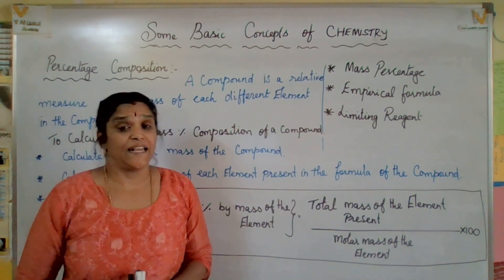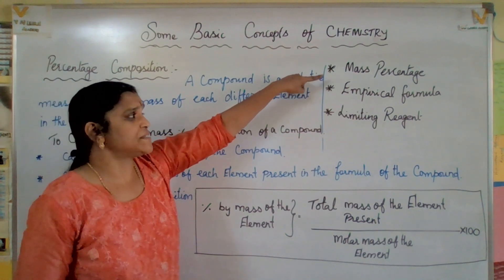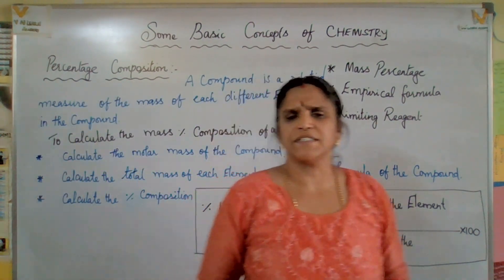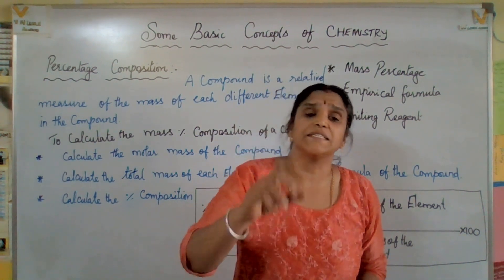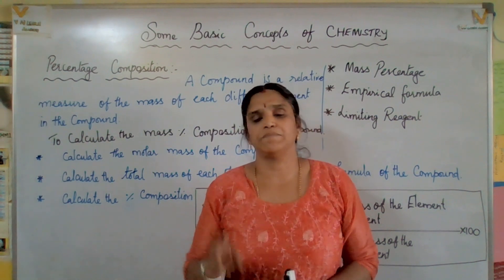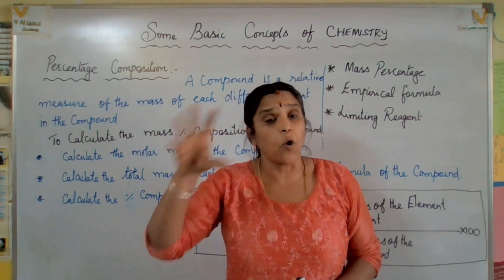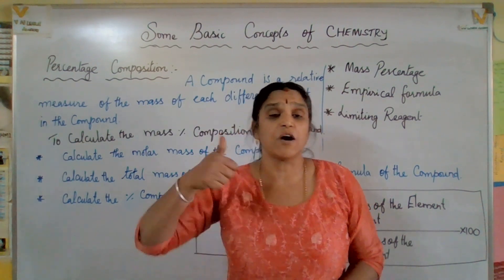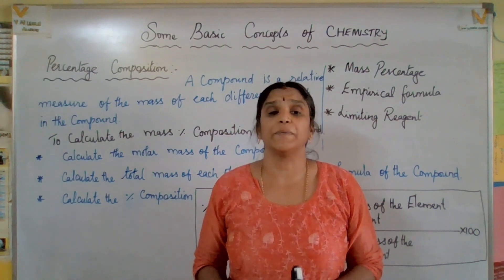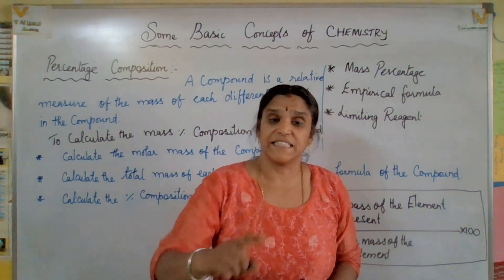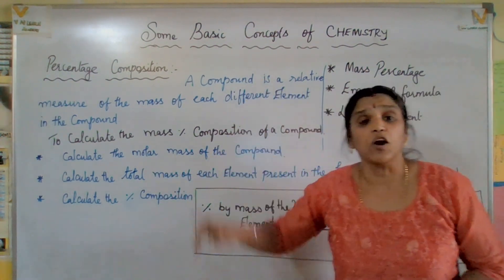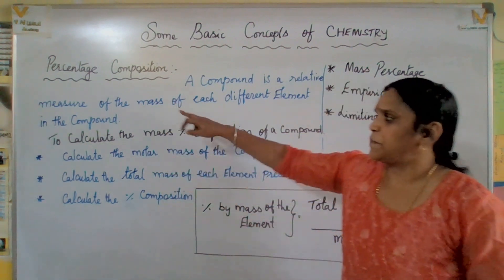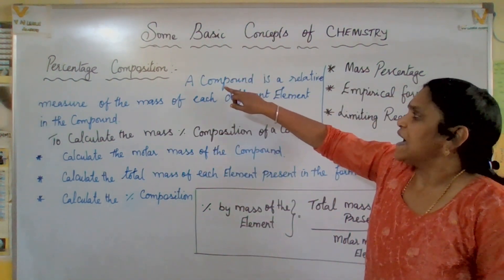Let us learn today's topic: mass percentage, empirical formula, and limiting reagent from basic concepts of chemistry. Mass percentage is very simple — it refers to the mass of each element present in a compound. For example, if you have five subjects and an overall percentage of 98%, each subject contributes a certain portion. The same way, a compound has elements, each with a specific percentage.